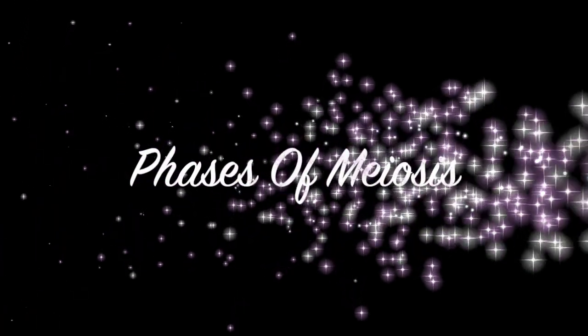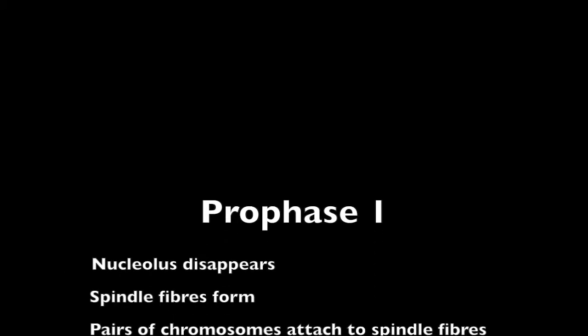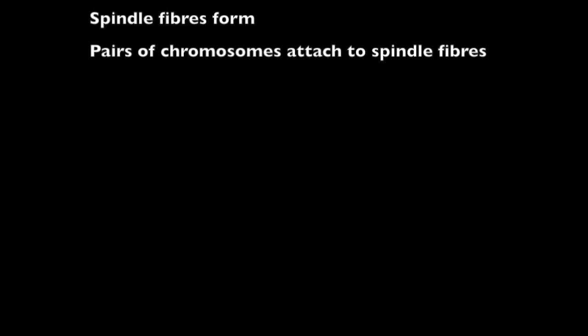Now, let's review the phases of meiosis. The first phase in meiosis is prophase I. In prophase, the nucleolus disappears and spindle fibers form. Pairs of chromosomes attach to spindle fibers.